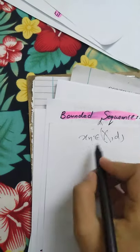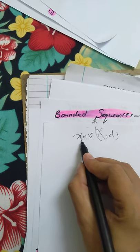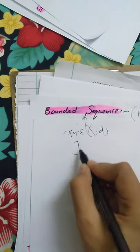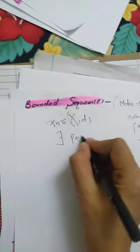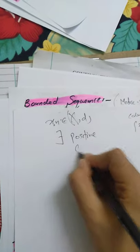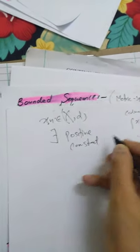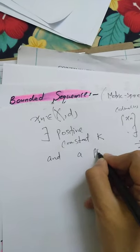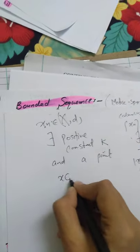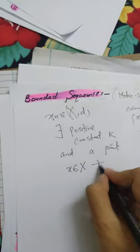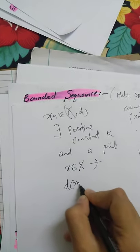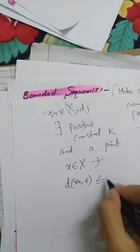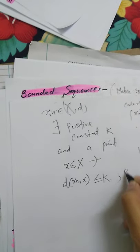So xn will be bounded if there will be a positive constant k and a point x belonging to X such that distance between xn and x is less than or equal to k for n belonging to positive integers.